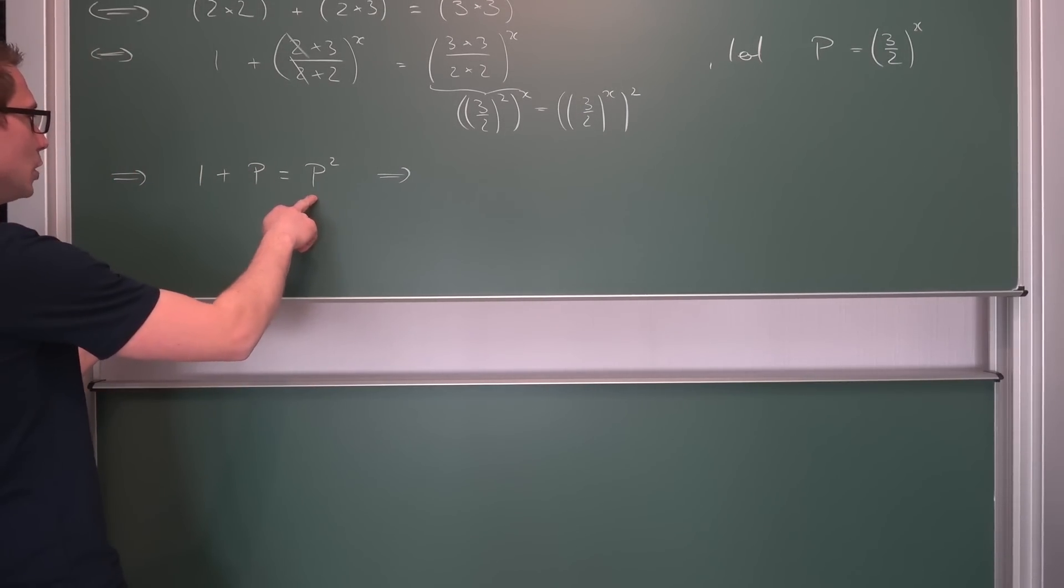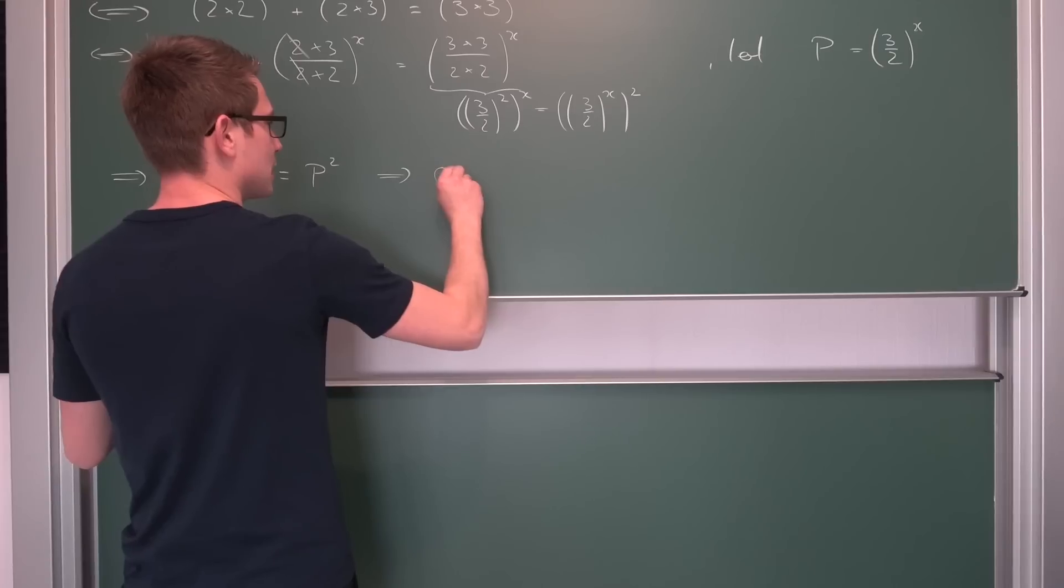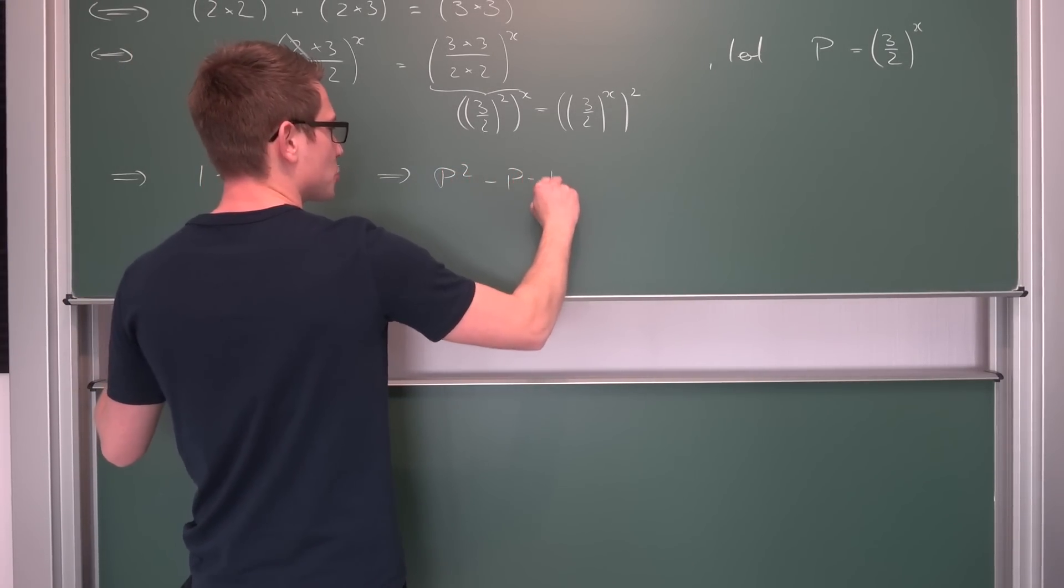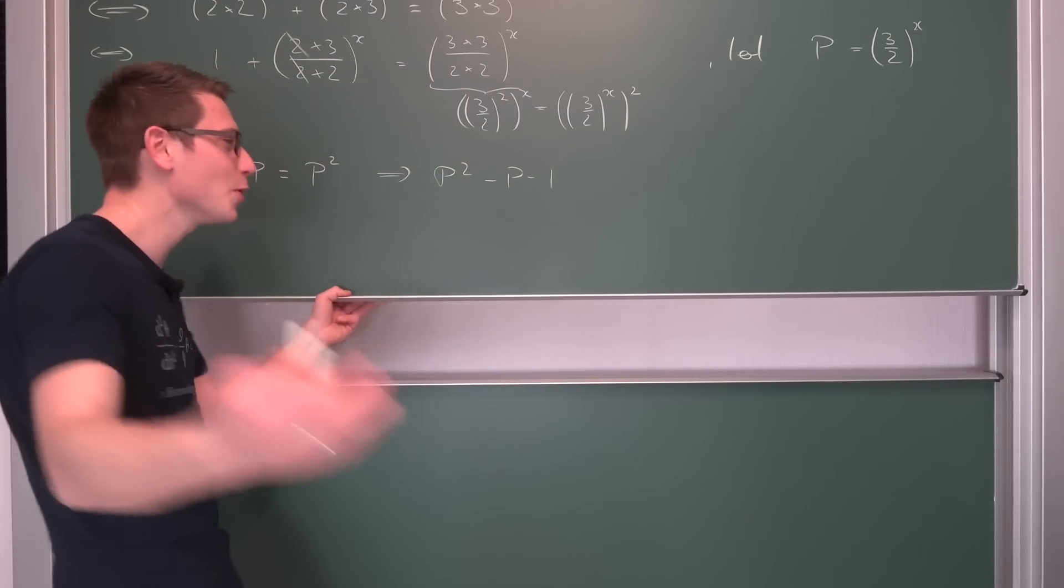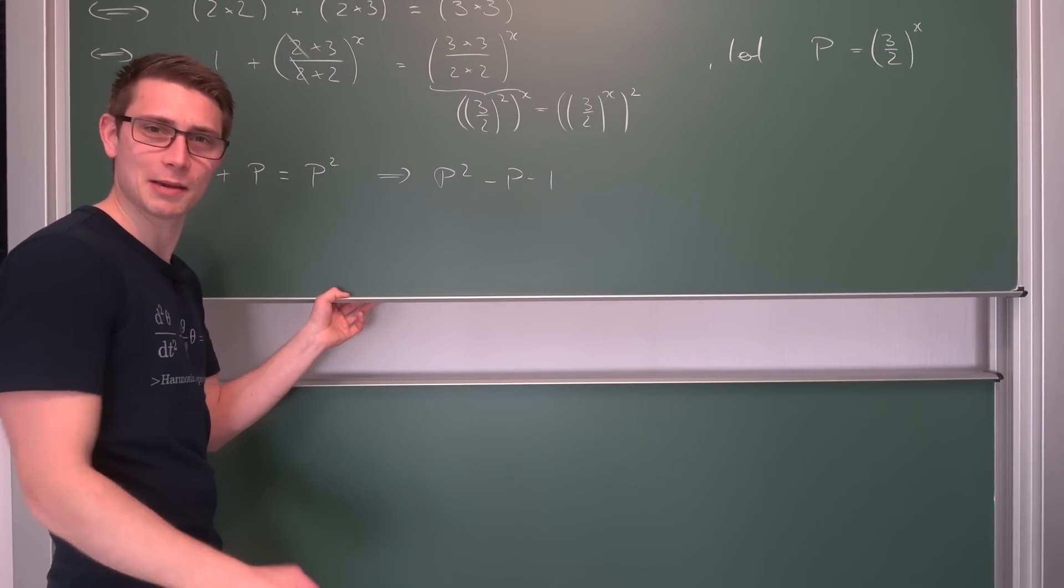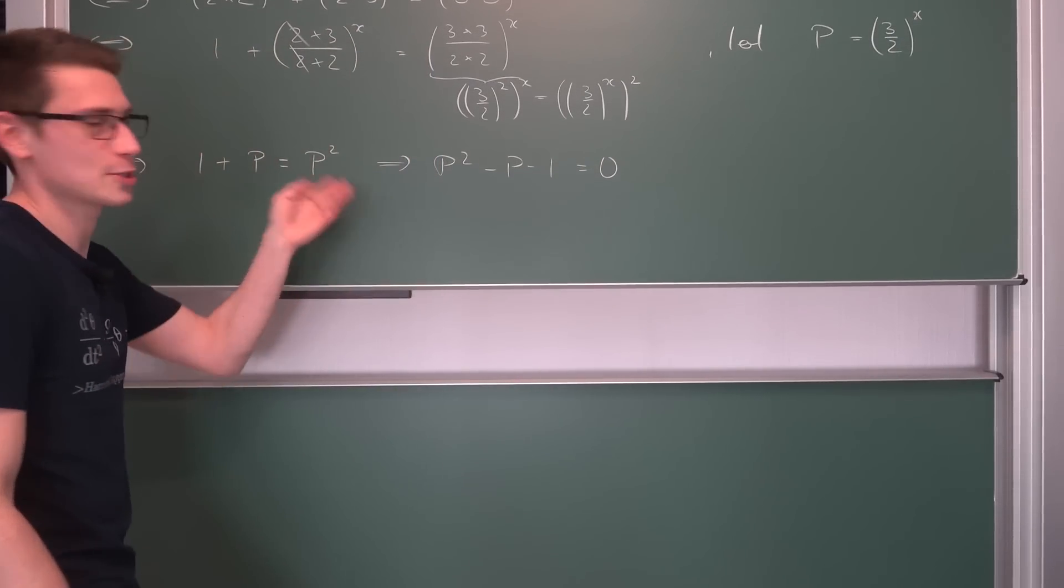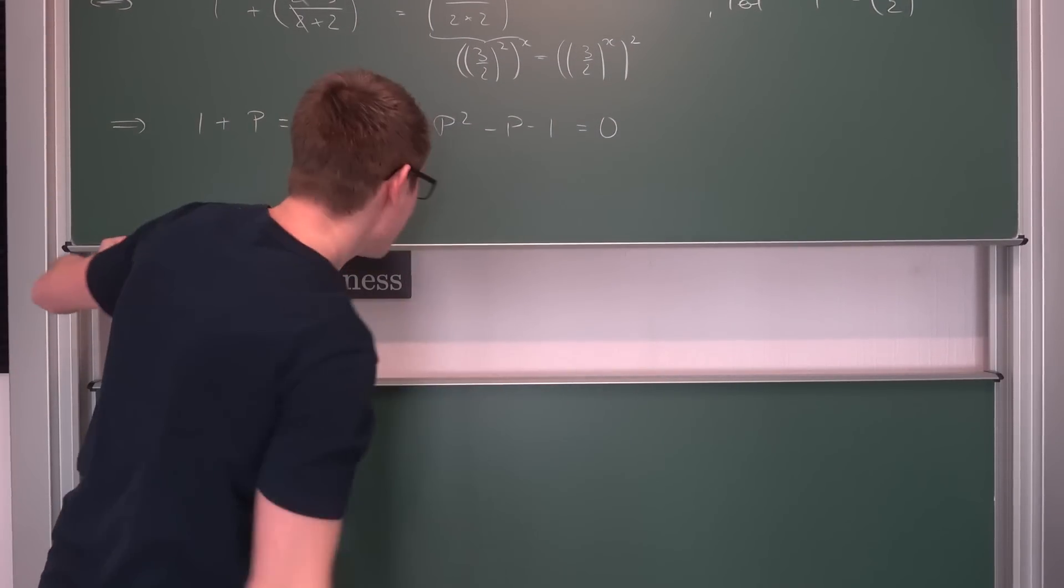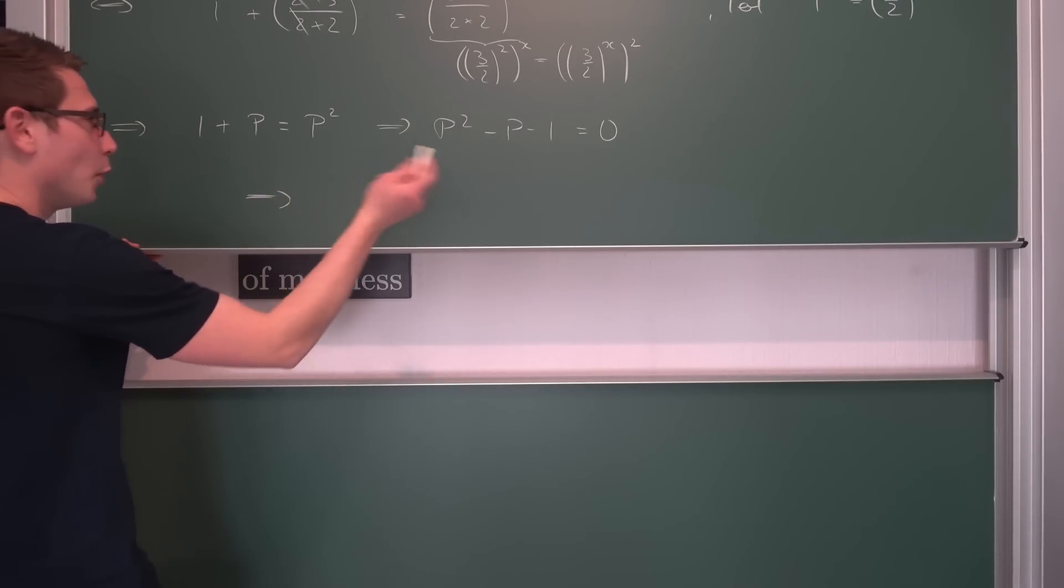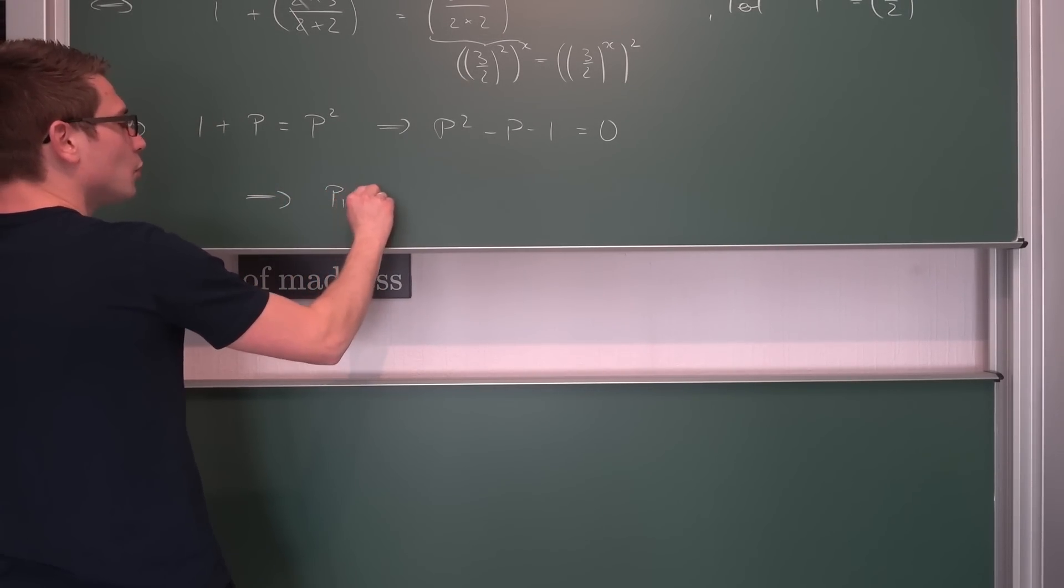We are just going to subtract rho and 1 on both sides, giving us rho squared minus rho minus 1. Not p, it's rho. See? This is why no one uses capital rho, because it's just confusing. It's equal to 0. And this is just a quadratic in capital rho, not p. This is capital rho giving us two solutions for rho.